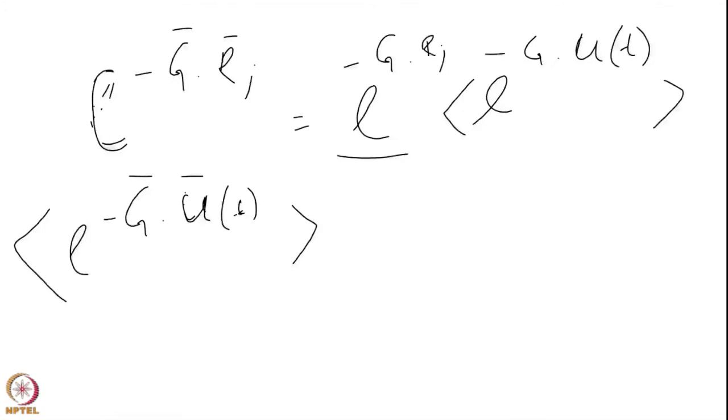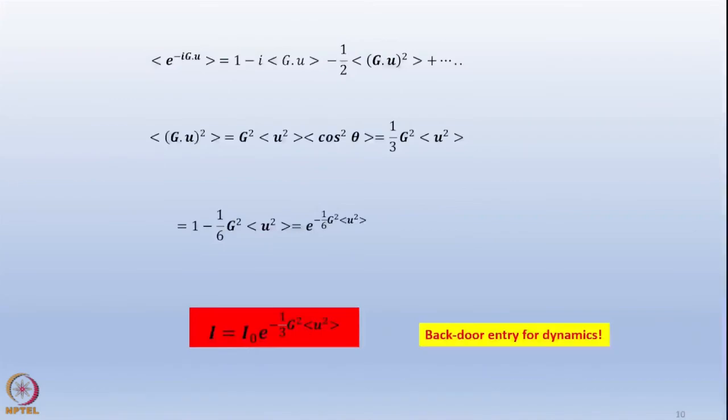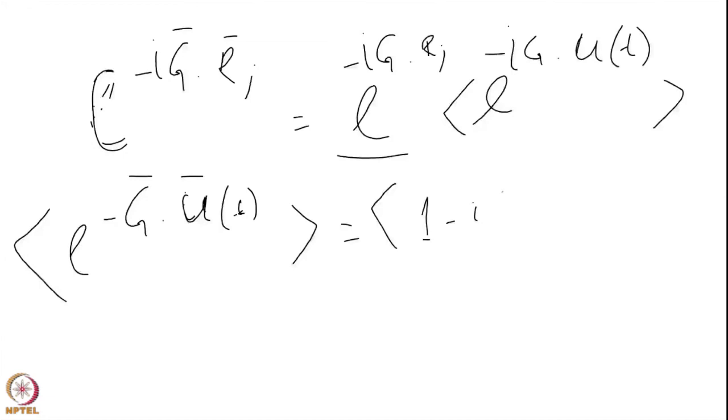This term, I need an average of. I can break it open and expand the exponential. I am sorry, I am missing an i everywhere. This is i everywhere. Now it equals 1 minus iG dot u, because this is G dot u, plus other terms. Under the assumption that G dot u is small, I can neglect the other terms. Then it becomes equal to 1 minus averaging G dot u minus 1/2 G square u square plus higher order terms.